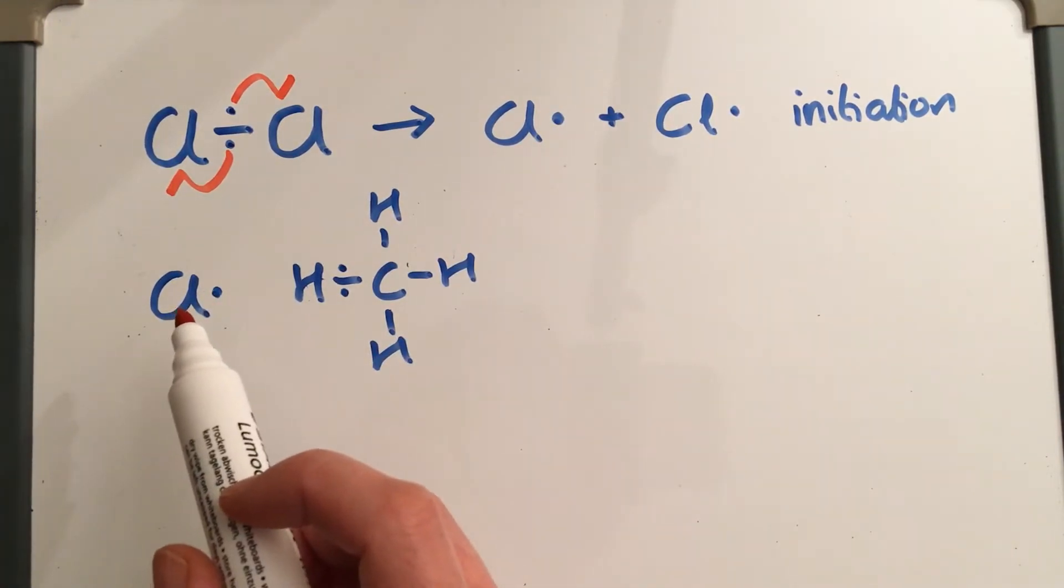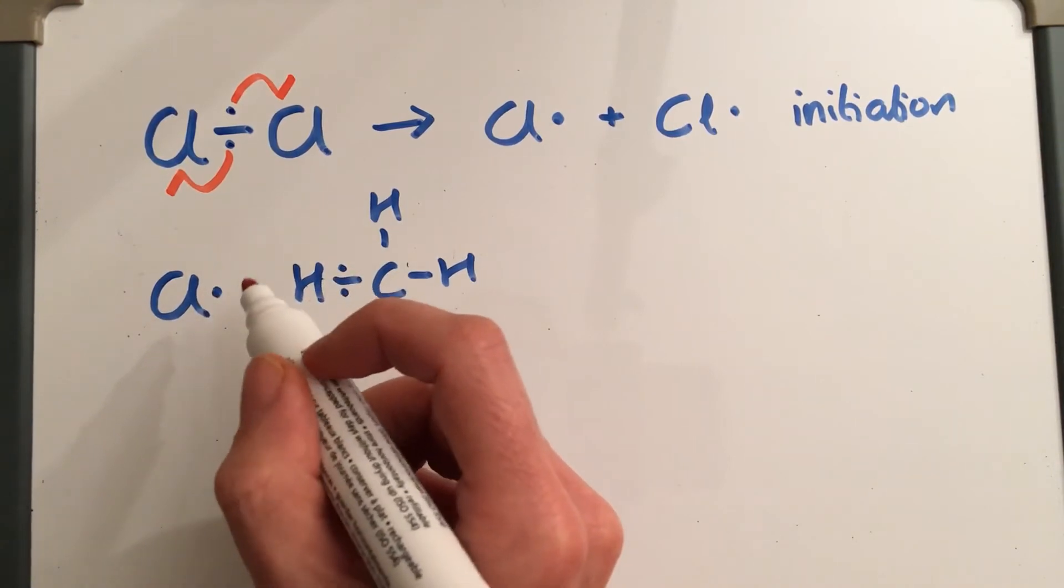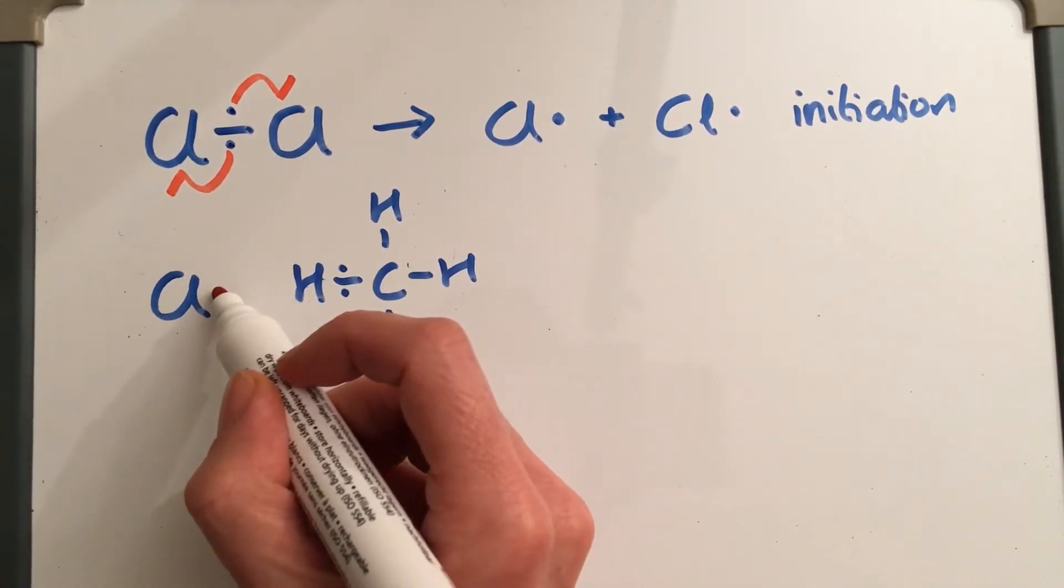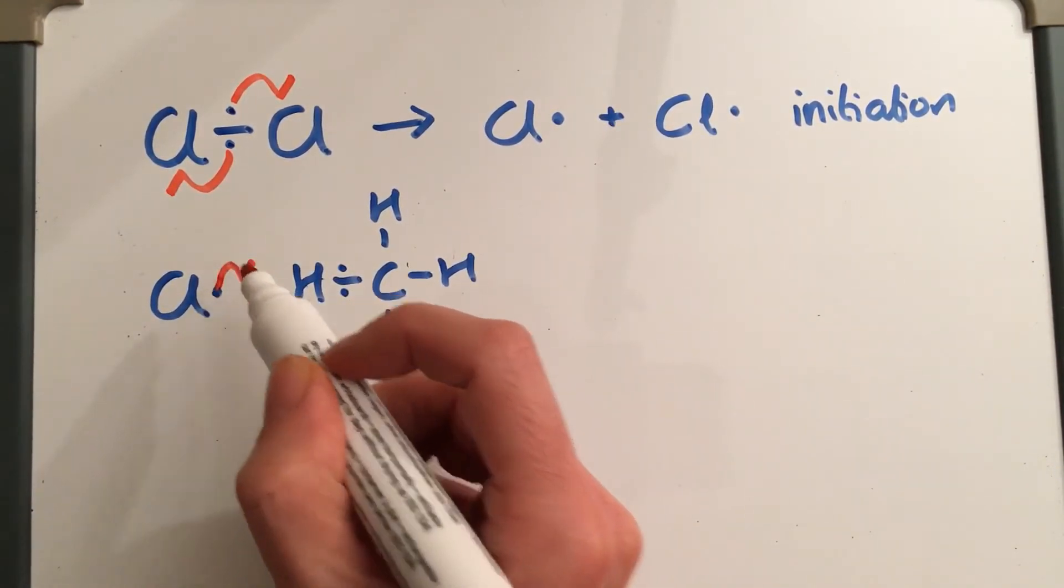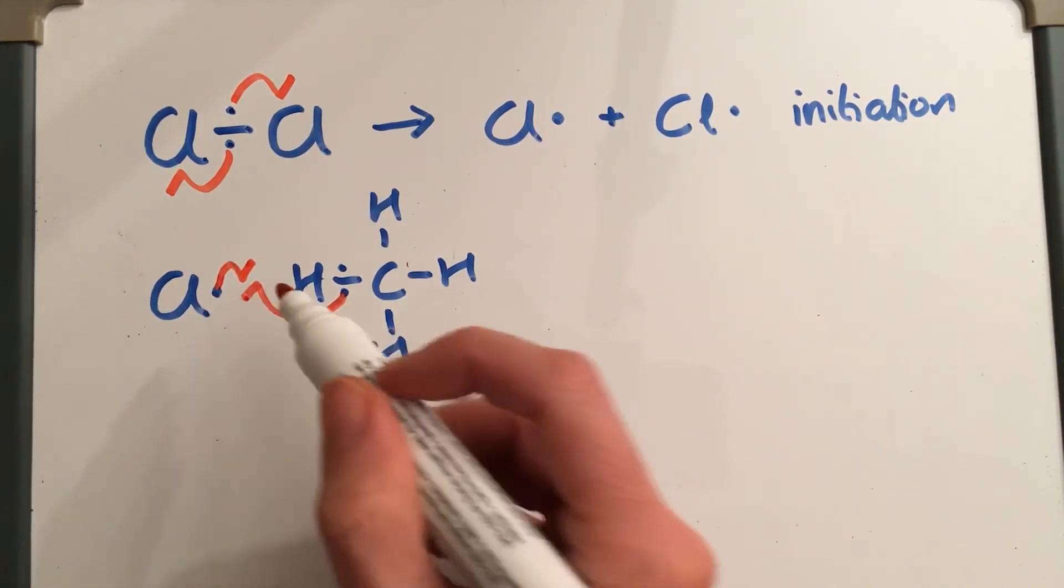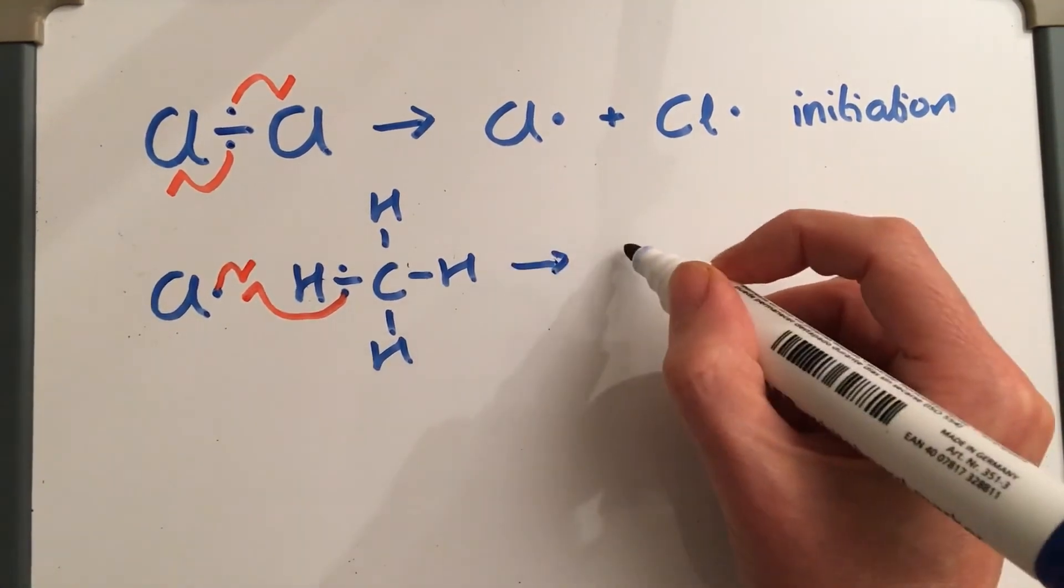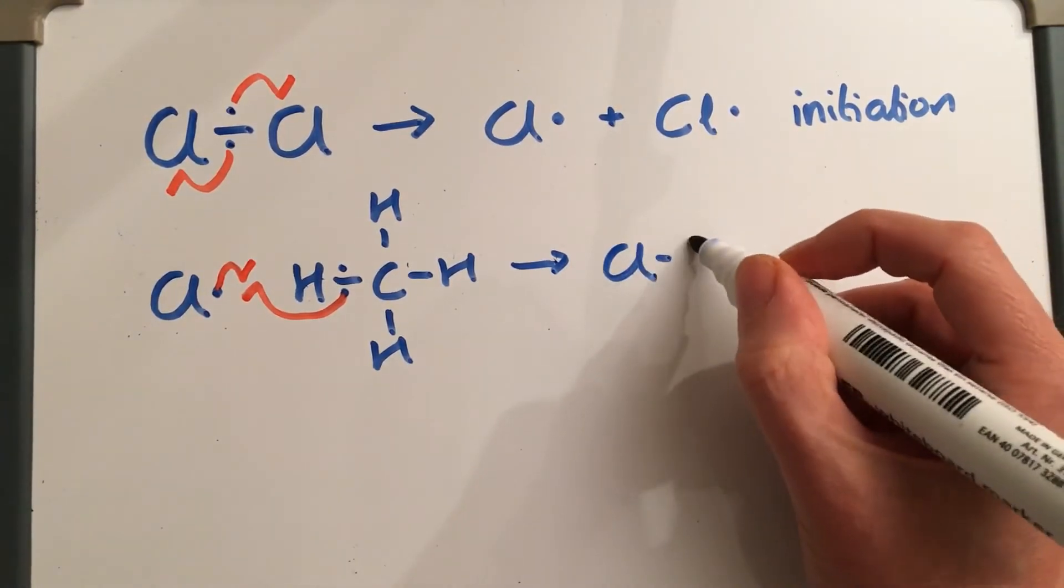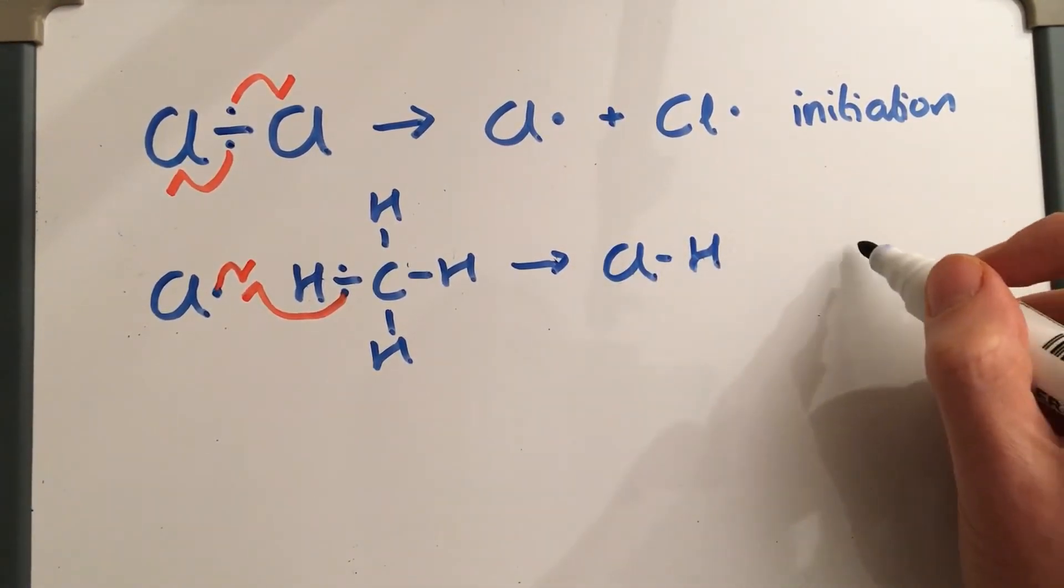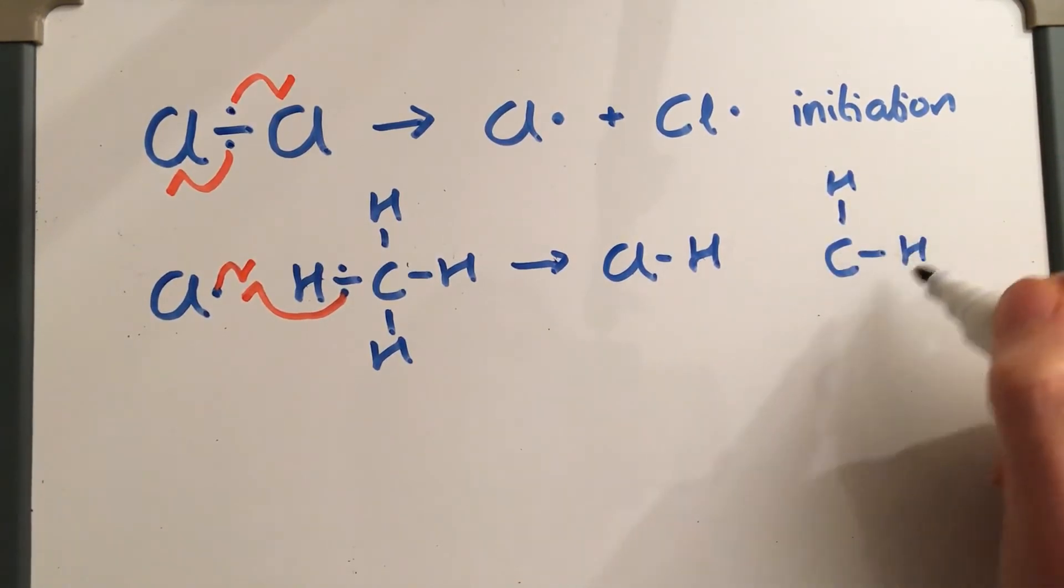So what's going to happen is this chlorine is going to form a bond to this hydrogen. It's a covalent bond - covalent bonds need two electrons - so it's one electron from there and one electron from there. And that forms a bond between the chlorine and the hydrogen, and then that leaves the rest of the methane, which is now a methyl group with an unpaired electron.